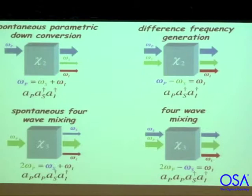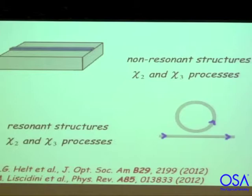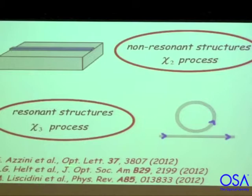In the same way that there's a relation between A and B coefficients for spontaneous and stimulated emission, there should be very close relations between these spontaneous processes and the corresponding classical processes. We've written a bunch of papers on that, talking about the links in both resonant and non-resonant structures. Some of our colleagues in Italy have actually done experiments that looked at this.